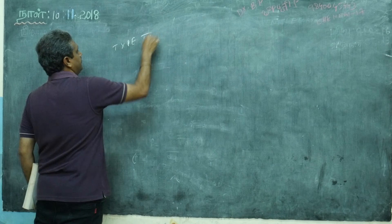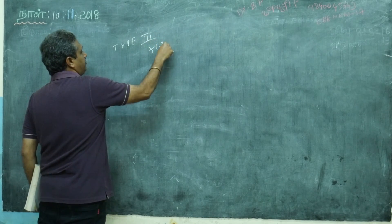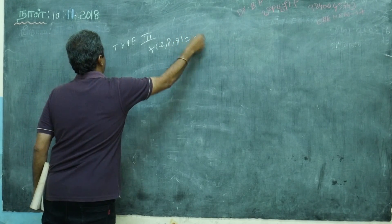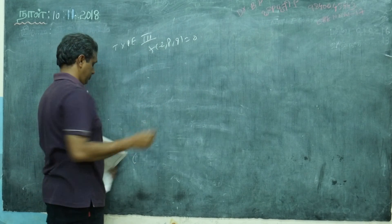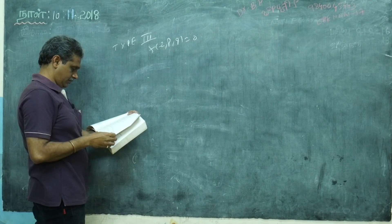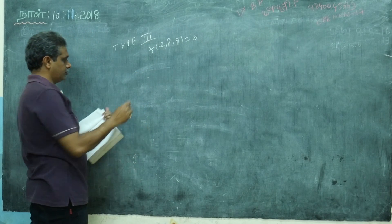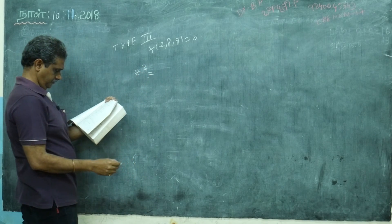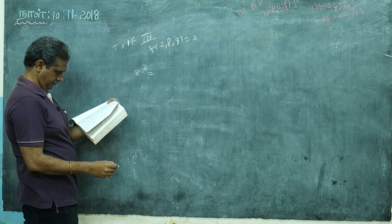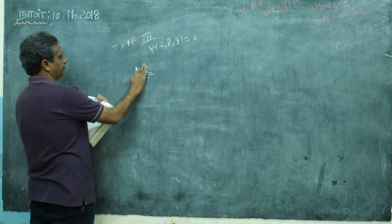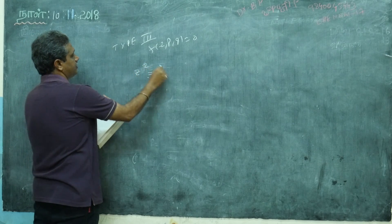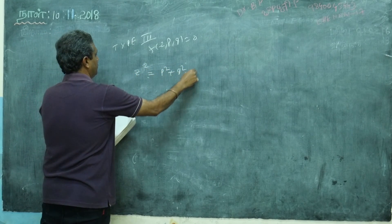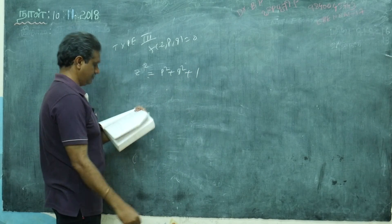Type 3. Don't label it just type 1 or type 2 — remember f of z, P, Q is one type. This is type 3. So let us do one small problem: z squared equals P squared plus Q squared plus 1.